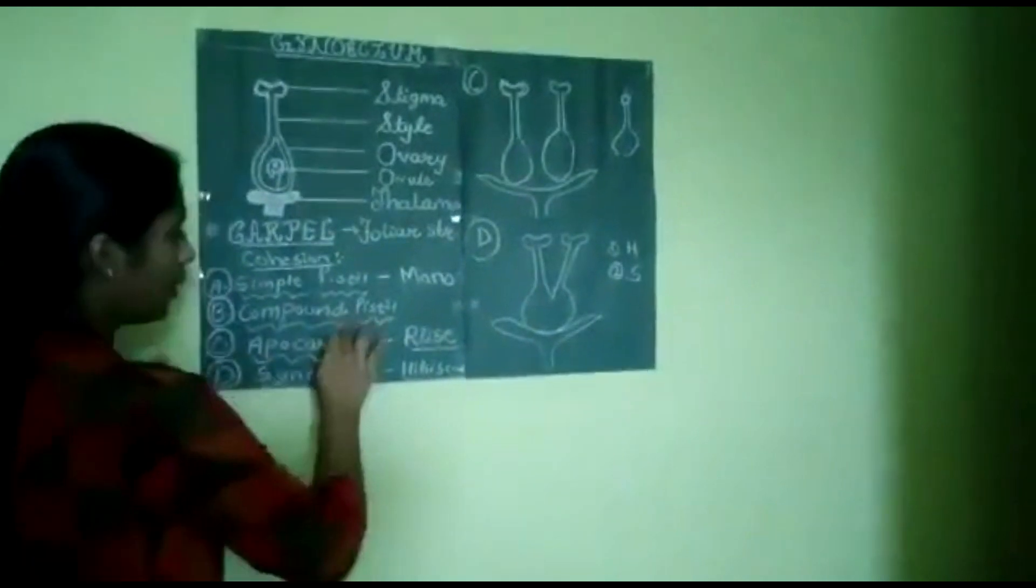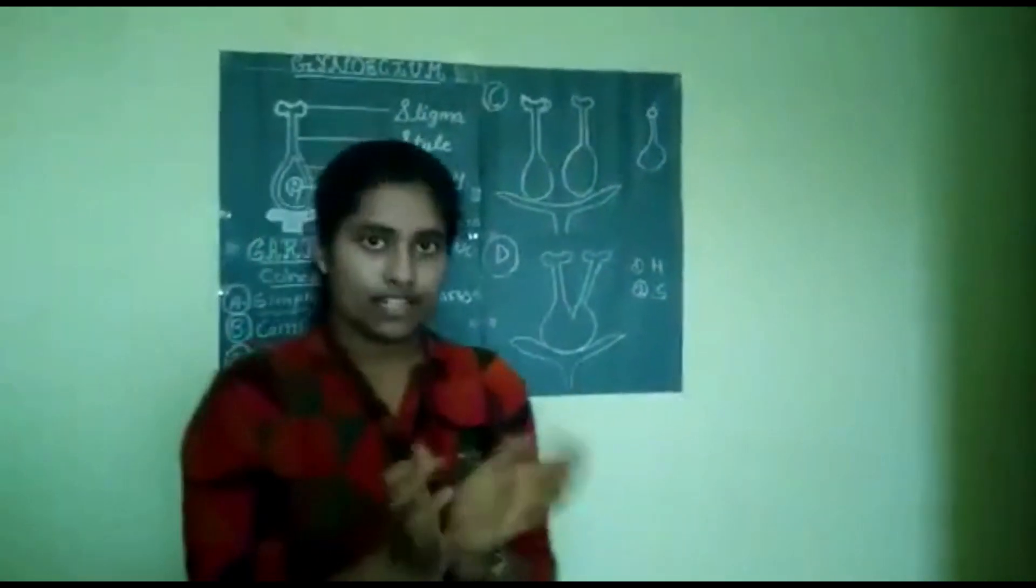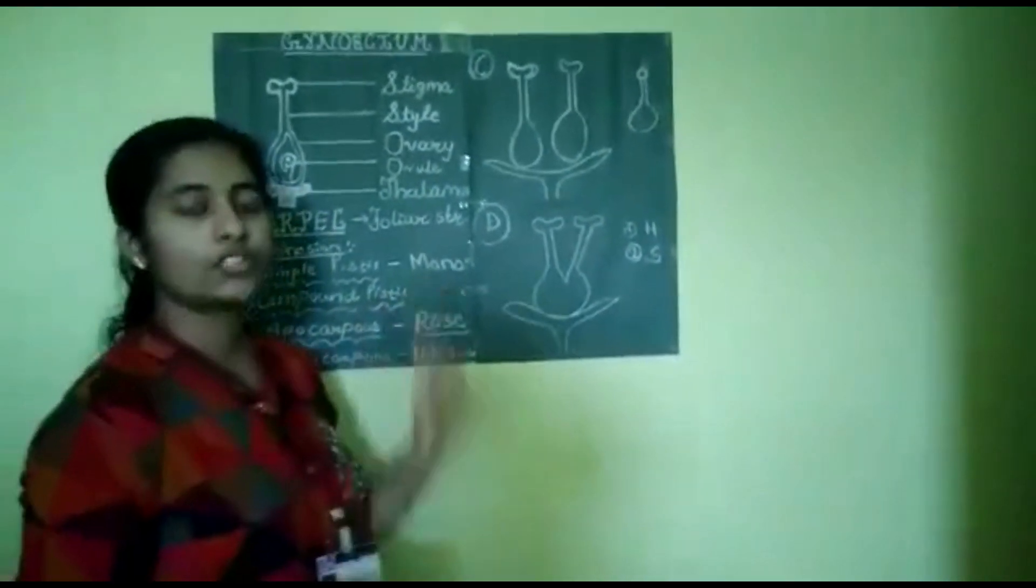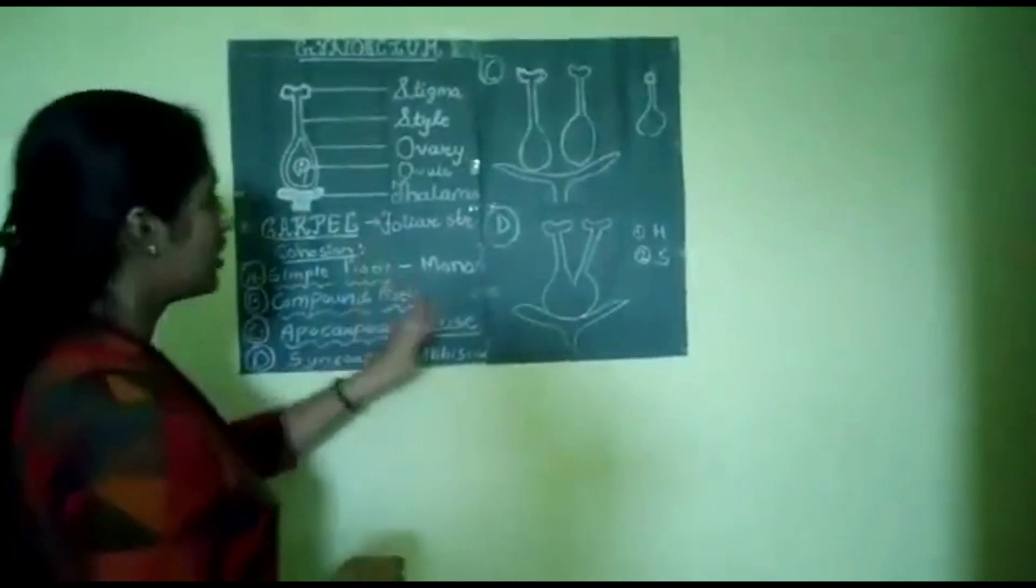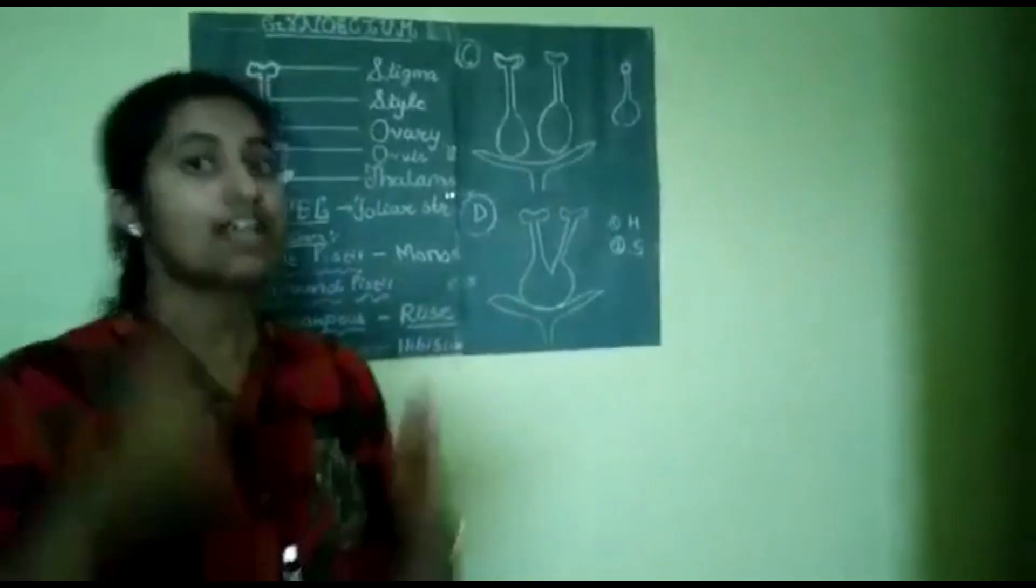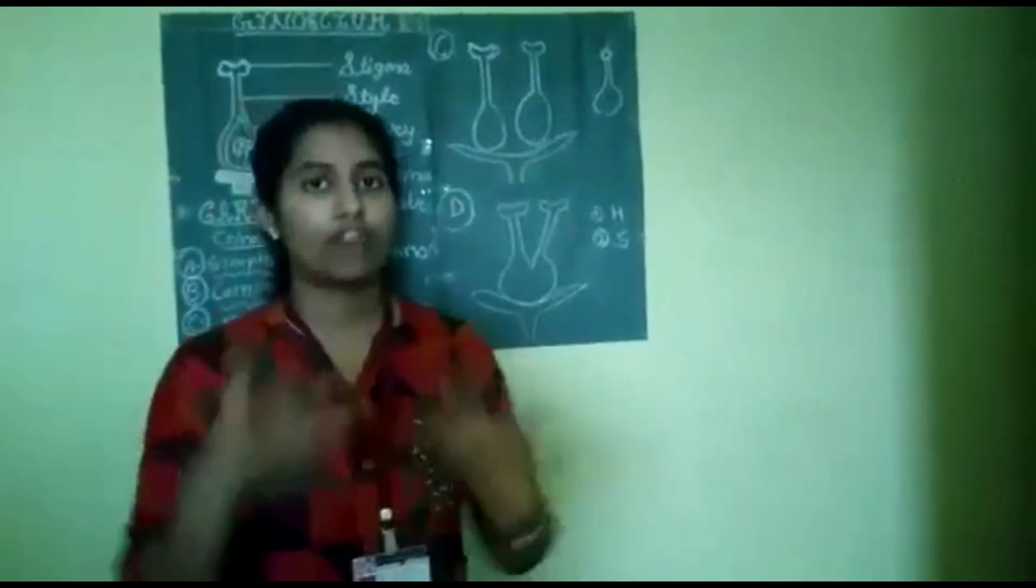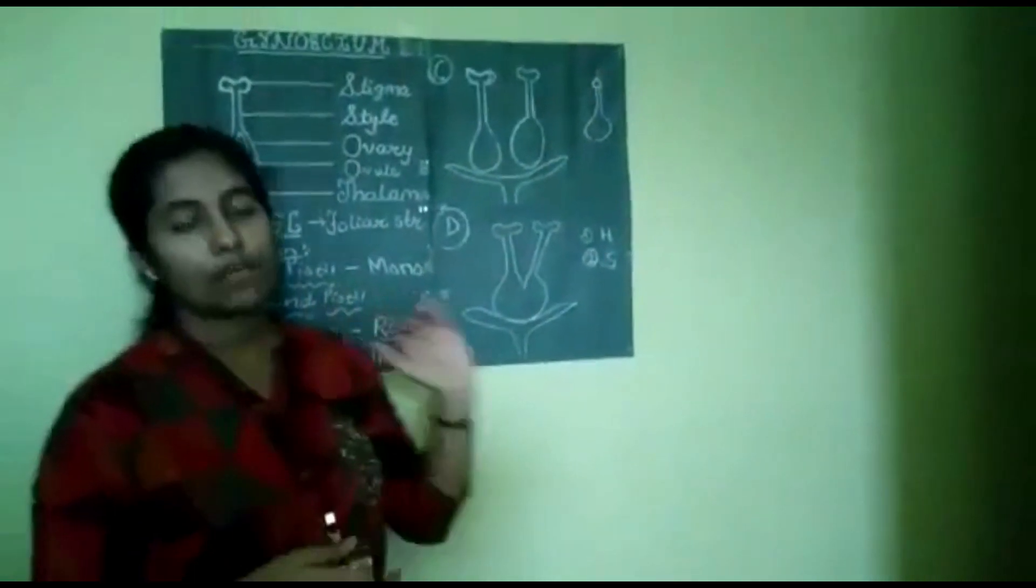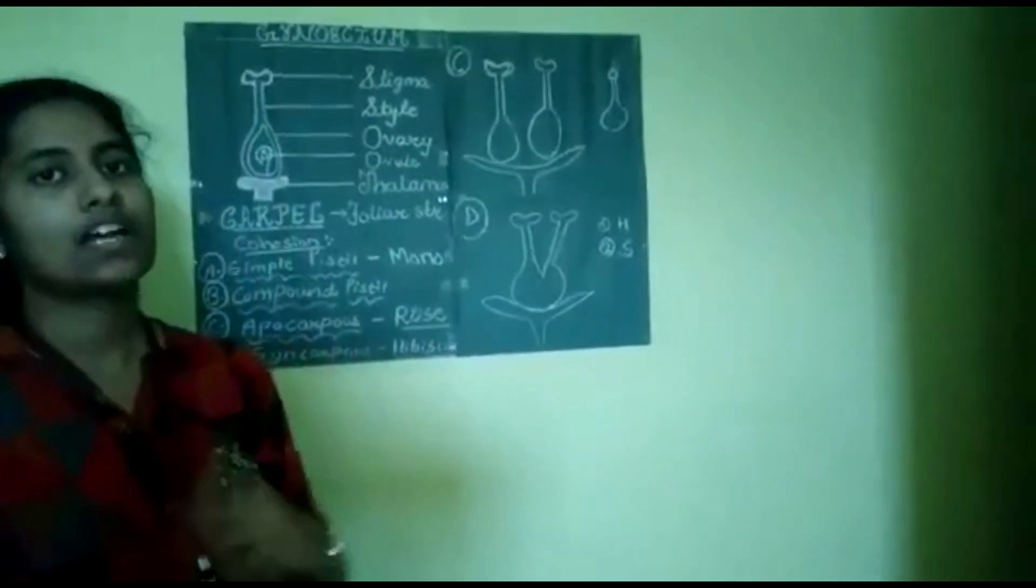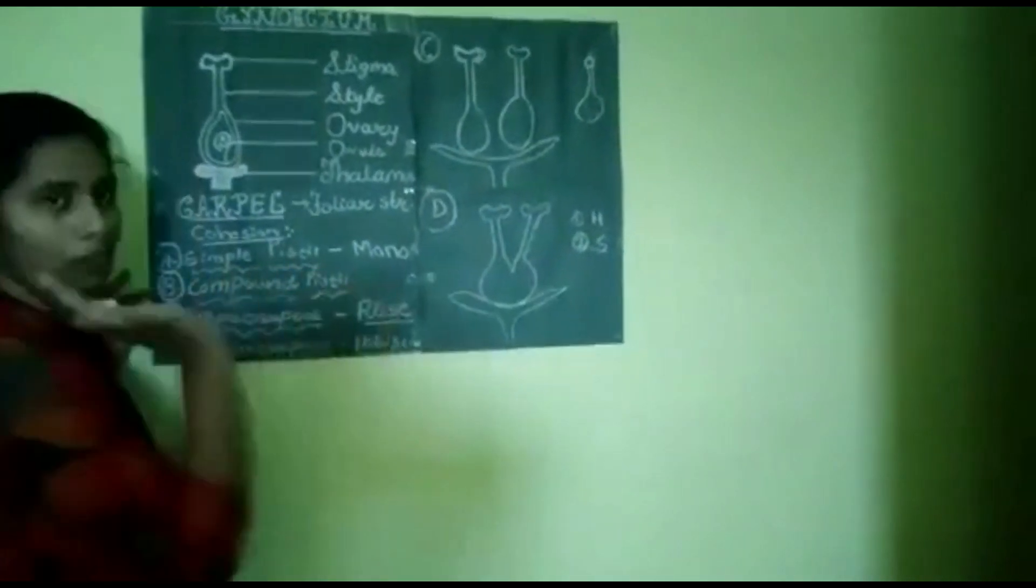Compound pistil are those pistil in which the flowers and which the gynoecium part is aggregated. They are formed in aggregate portion. It is been divided into bicarpellary which is having two carpels, tricarpellary which is having three carpels, tetracarpellary having four carpels, pentacarpellary having five carpels, and polycarpellary having many carpels, more than five. Bicarpellary example, datura. Tricarpellary example, stellarium. Tetracarpellary example, datura itself. Pentacarpellary example, hibiscus. And last one, polycarpellary example is Pachira.